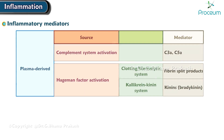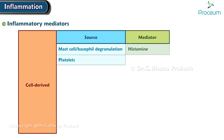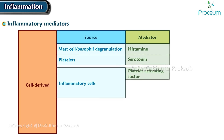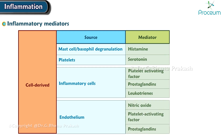There are also cell-derived inflammatory mediator sources, such as mast cell or basophil degranulation giving rise to histamine, platelets producing serotonin, inflammatory cells producing platelet-activating factor, prostaglandins, and leukotrienes, and endothelium producing nitric oxide, platelet-activating factor, and prostaglandins.